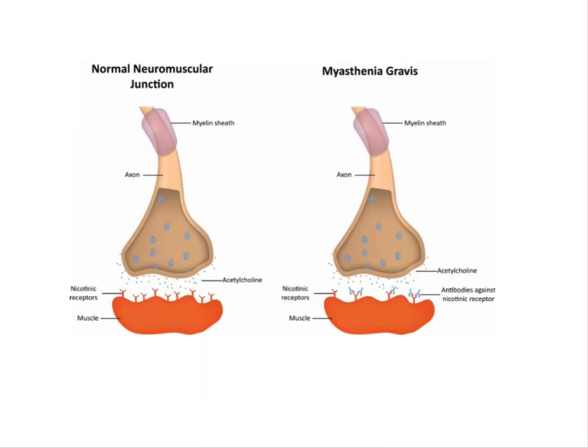In the normal neuromuscular junction, after your nerve terminal endings, acetylcholine is released, and on the muscles there are nicotinic receptors present, as you can see in this image. The acetylcholine binds with these nicotinic receptors and produces the function of this muscle. In myasthenia gravis, acetylcholine is still released normally - there's no problem with that - but it is an autoimmune disease.